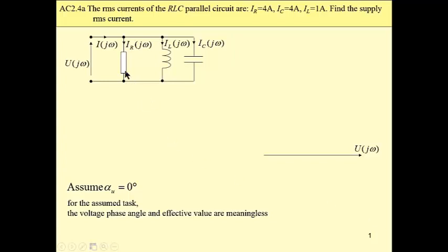We have a parallel connection of three elements: R, L, and C. We know the currents flowing through these elements, and our task is to find the effective value of the total current.